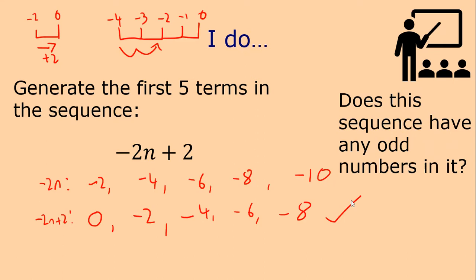Does this sequence have any odd numbers in it? Hopefully you can see that no, it doesn't. Just like the 2 times table only ends in a 0, 2, 4, 6, or 8 — the sequence -2n plus 2 does the same. The pattern of 0, 2, 4, 6, 8 is going to continue repeating forever. So the answer is no — it doesn't have any odd numbers in it.